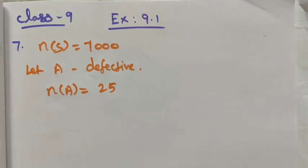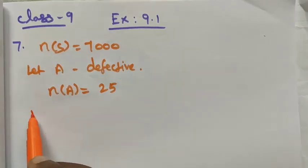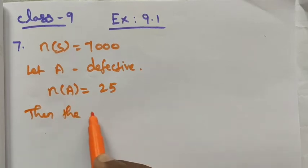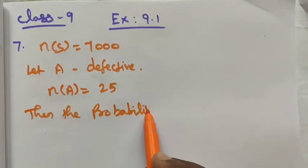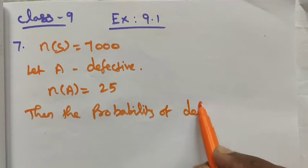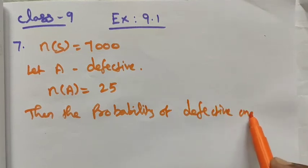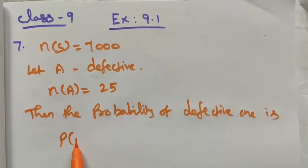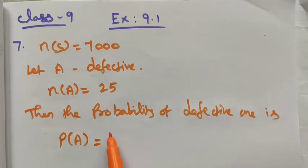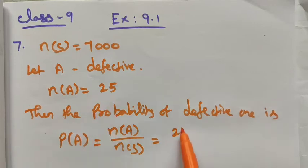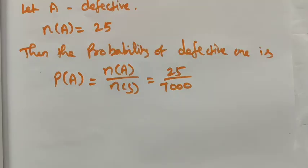Then the probability of defective one is P(A). P(A) is equal to n(A) divided by n(S). We know the formula. n(A) is 25 and n(S) is 7000.